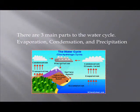There are three main parts to the water cycle: evaporation, condensation, and precipitation.